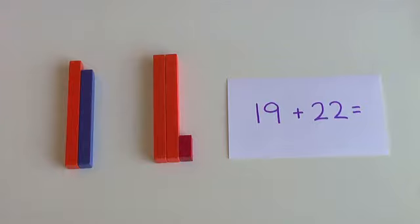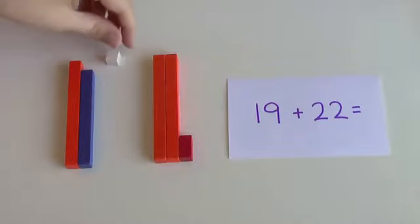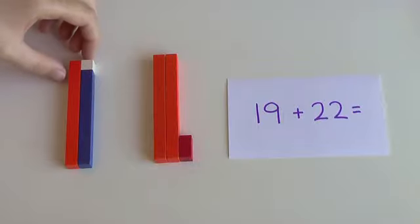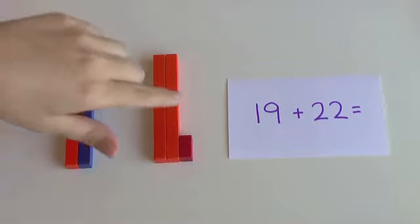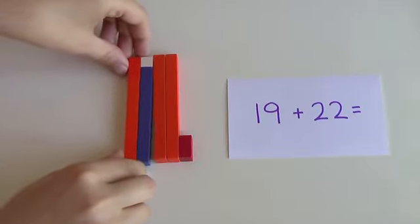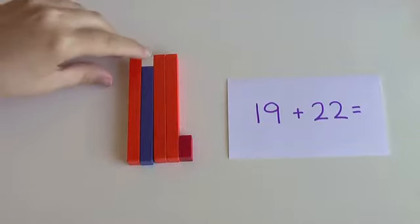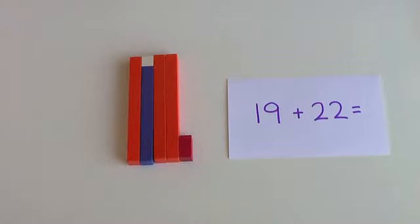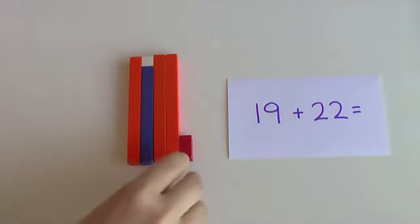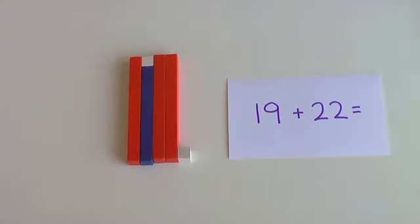So let's start off with 19 plus 22. What we're going to do is think, well, what's close to 19 that I would rather add? Because 19 is kind of an ugly number to add, so I think I would rather add 20 because that's a nice round number. So I'm going to add a little 1 here so I can add 20 plus 22 nice and easily. That's just 42, right? But I didn't want to add 20, I only wanted to add 19. So since I had added this 1 here, I have to take away a 1 from my final answer. So 42 minus 1 is 41.